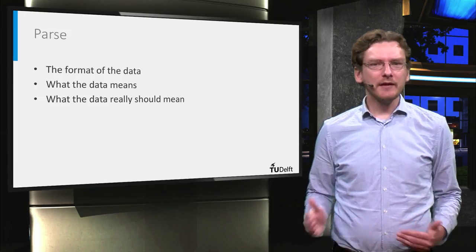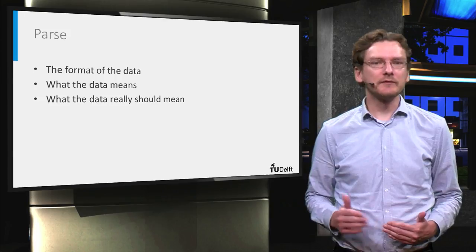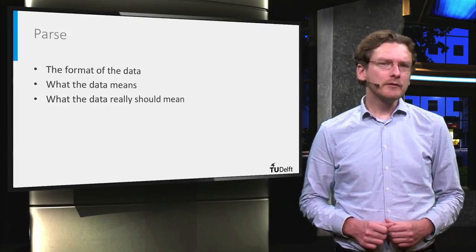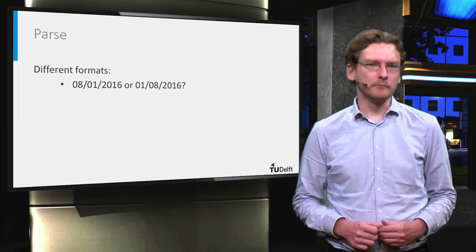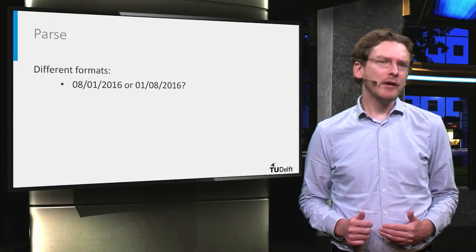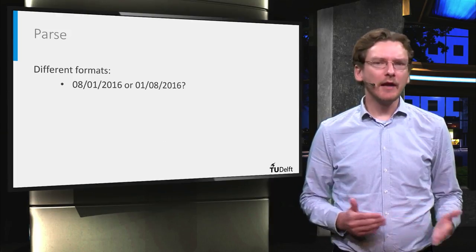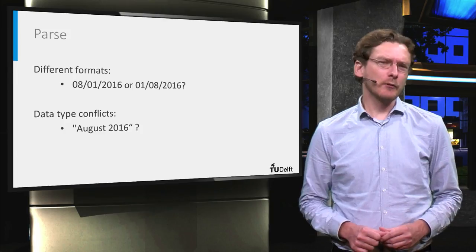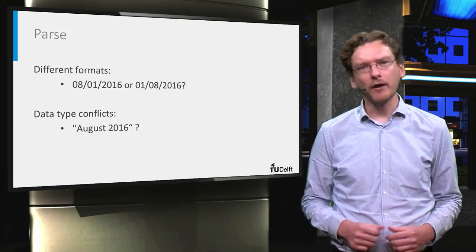The next thing to be aware of is what the data actually means. Specifically, there are numerous data types that represent things such as text, dates, numbers, and geographic coordinates. One thing that you will likely experience is that parsing dates will sometimes cause problems. For example, a date that looks like 8-1-2016 may actually mean 1-8-2016, depending on if you expect the day or the month to appear first. Dates such as August 2016 may also be ambiguous if the computer expects a day of the month to be specified as well.